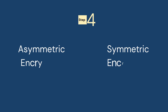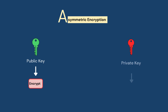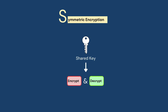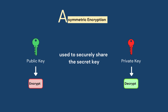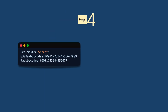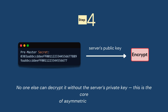Now let's talk about asymmetric encryption and symmetric encryption. Asymmetric encryption uses two keys — a public key to encrypt and a private key to decrypt. Symmetric encryption uses one shared key for both encryption and decryption. In TLS, asymmetric encryption is used to securely share the secret key, and symmetric encryption is used after that to encrypt all data because it is faster. The browser generates a pre-master key (PMK) and encrypts it using the server's public key. No one else can decrypt it without the server's private key — this is the core of asymmetric encryption.